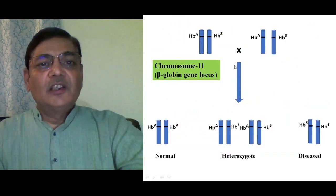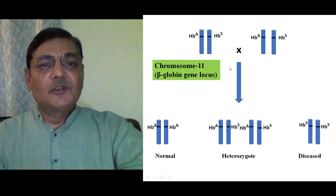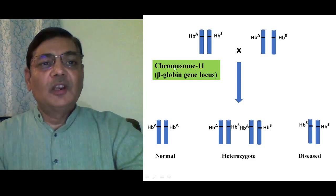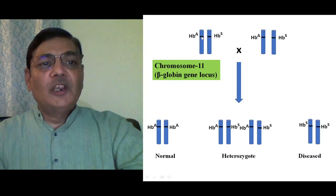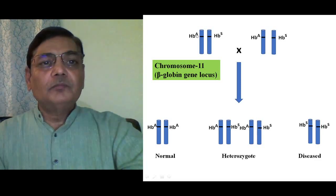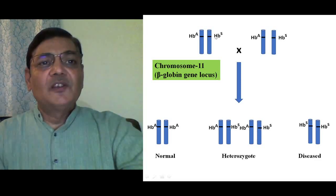We can understand the genetics of this disease because it occurs due to mutation in a specific gene situated on chromosome 11. There is a specific locus on chromosome 11 which encodes for beta globin protein. This beta globin gene is normally indicated as HbA, which is the normal allele. The mutated form of this gene is referred to as HbS, where S stands for sickle cell anemia.